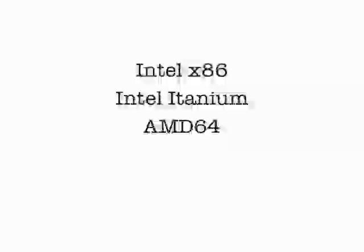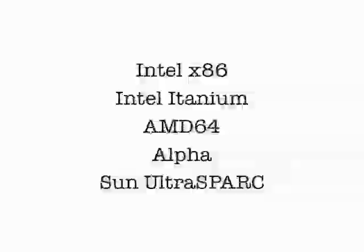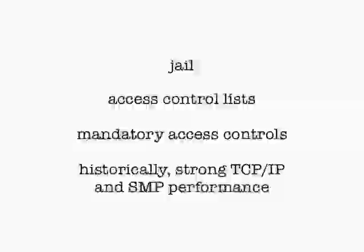FreeBSD, to give a little background — it came out of 386BSD. It runs on Intel x86, Itanium, AMD64, Alpha, and Sun UltraSPARC. It gives us some neat features: jails, which most of us are familiar with, Access Control Lists, MAC — and historically it's had very strong TCP/IP and SMP performance.